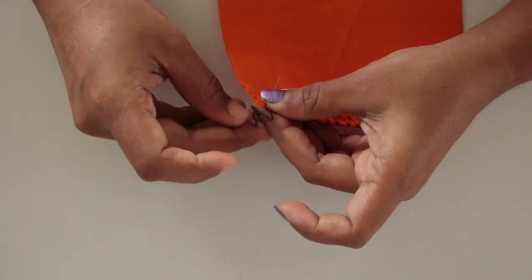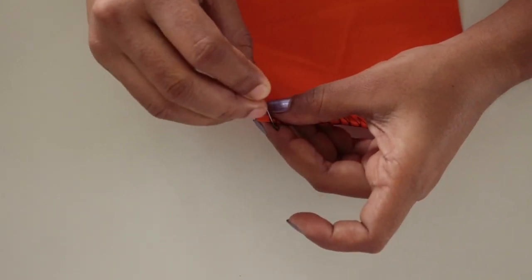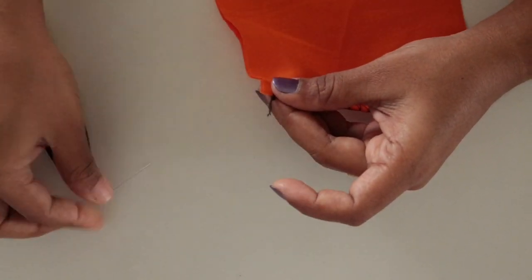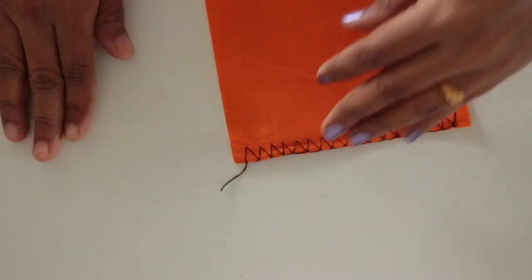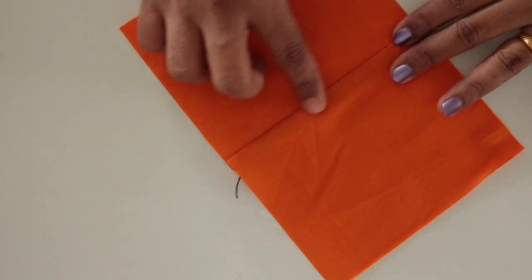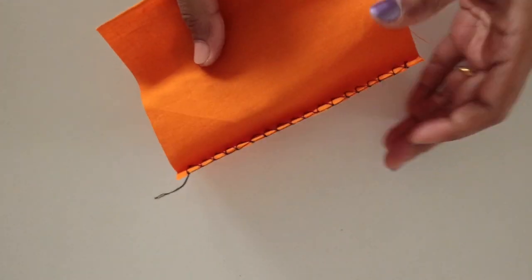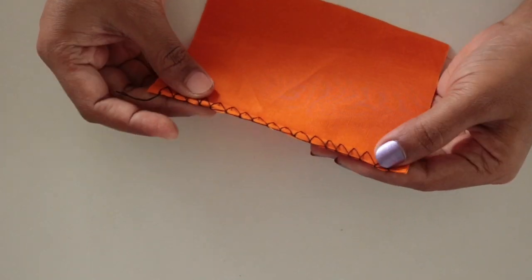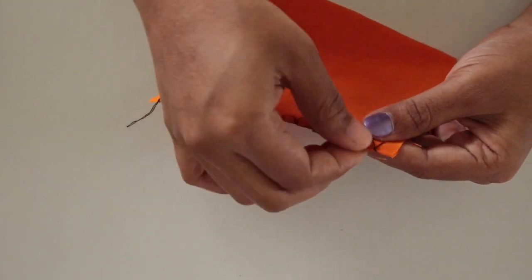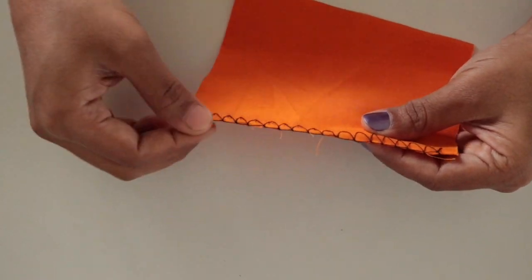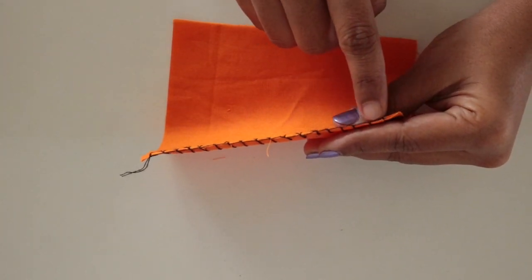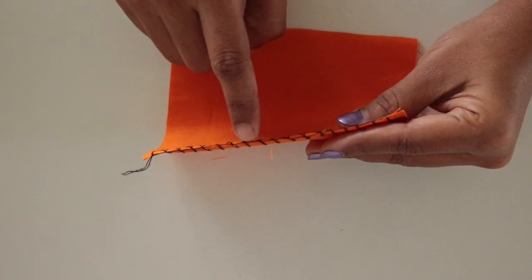Now tie a knot at the end and cut the thread. Now you can see we have a nice stitch over here and we have completely finished our edge. There's hardly any raw edge. So you can see here this thread holds the raw edges.